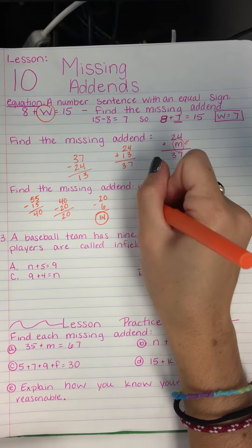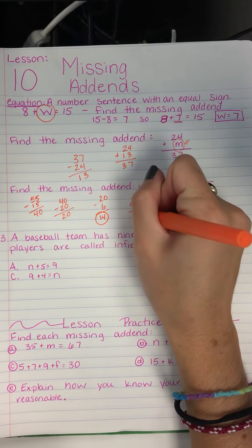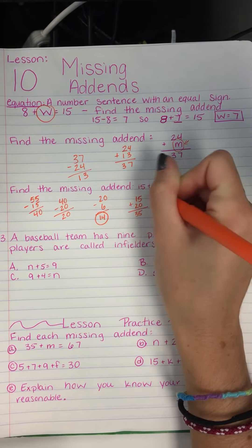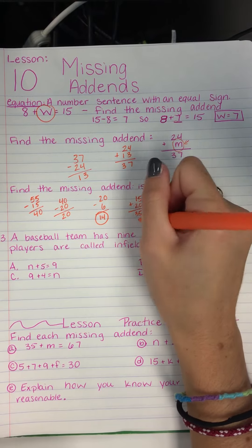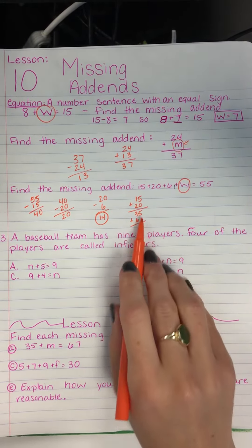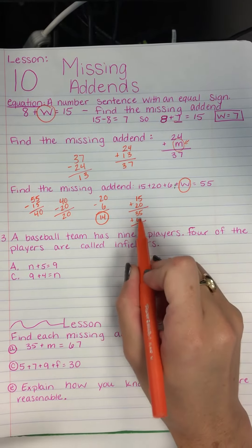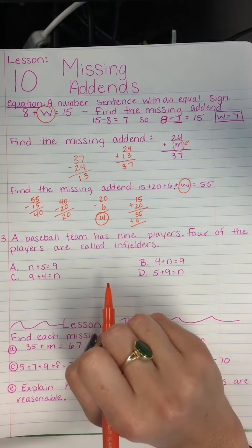Okay, so we need to do 15 plus 20. That equals 35. Plus 6 equals... Ooh, I put that in the wrong spot. See? This is the type of mistake that you guys could make. Is putting this in the wrong spot, and then adding it completely wrong.